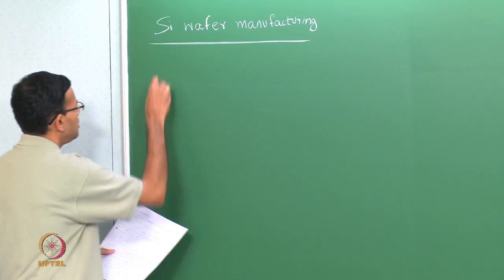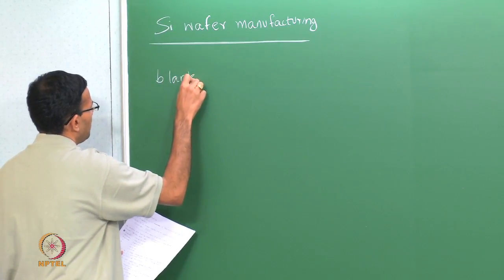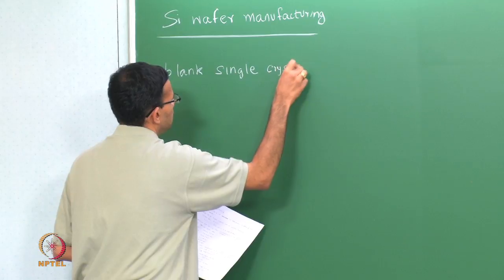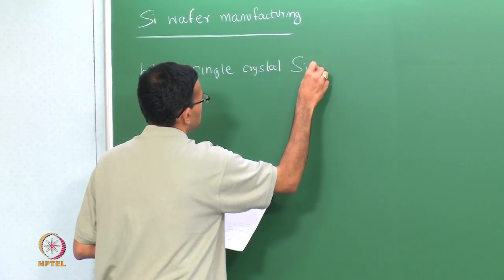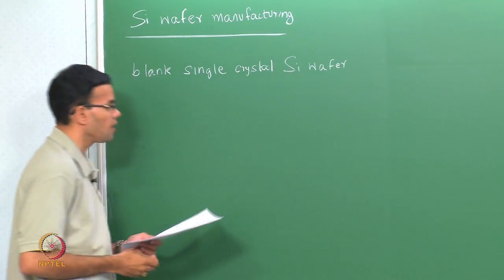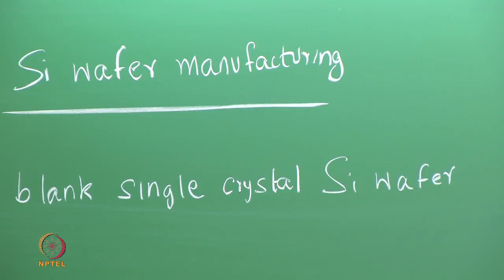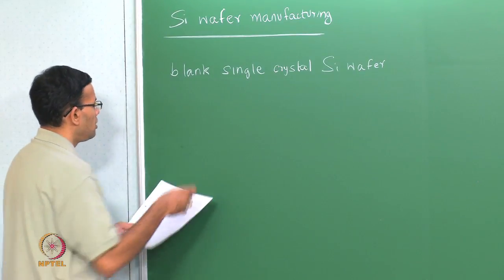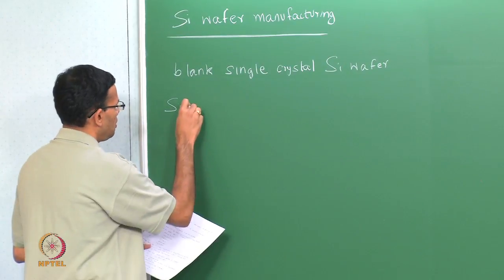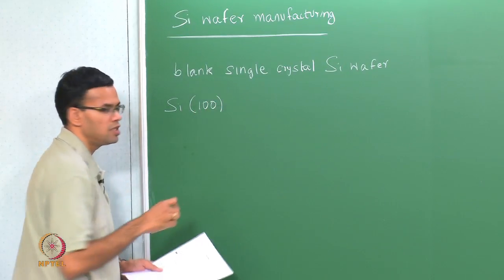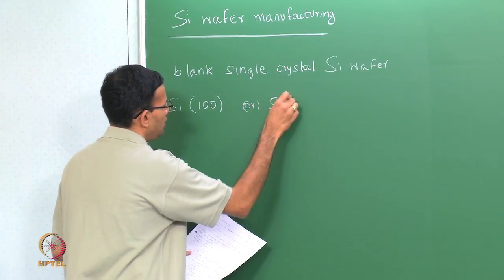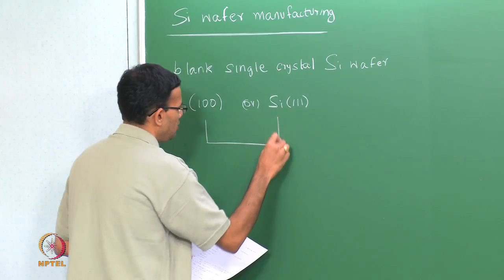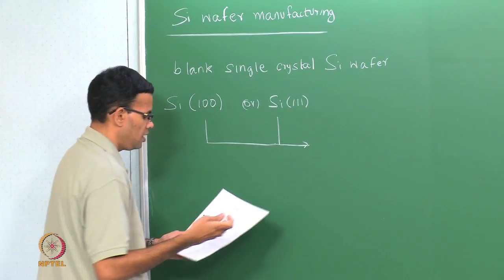In the case of a fab, the first thing you need is a blank single-crystal silicon wafer. This blank wafer goes through all the operations in the fab in order to produce the various components of the integrated circuit. Silicon wafers usually have a specific orientation — we either talk about silicon (100) or silicon (111), the most commonly used wafers. These refer to the plane that is parallel to the surface.